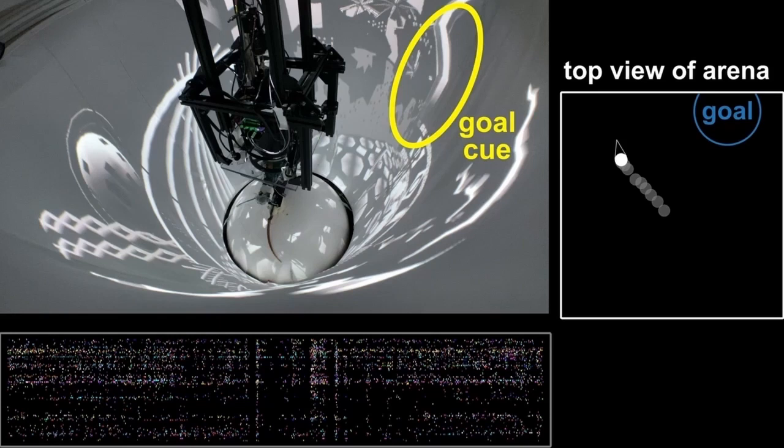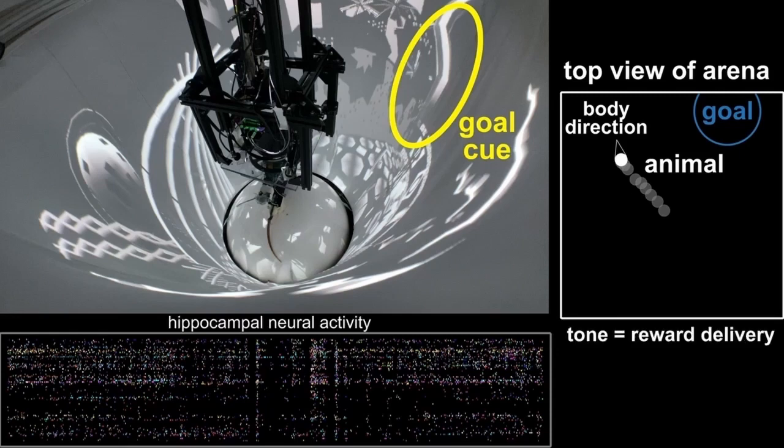We represent the goal cue with a blue circle, animal's location with a white dot, its body direction with a triangular arrow. When the animal successfully touches the goal cue, a sound will play, signaling the delivery of a water reward.